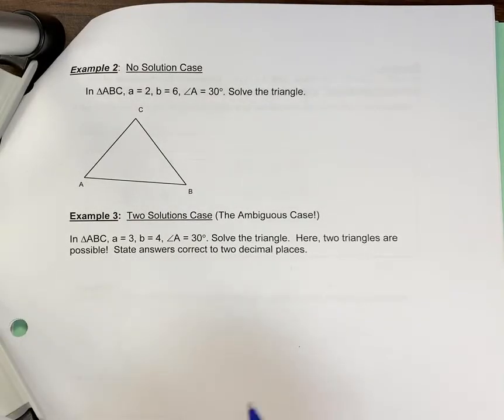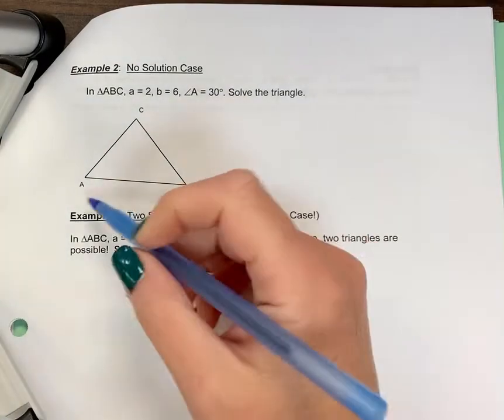In example two, we're going to look at what happens when there's a no solution case. So looking at triangle ABC here,